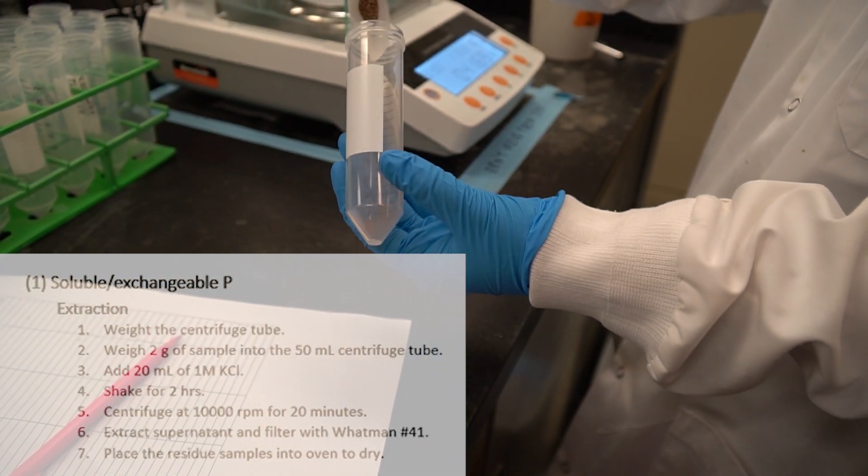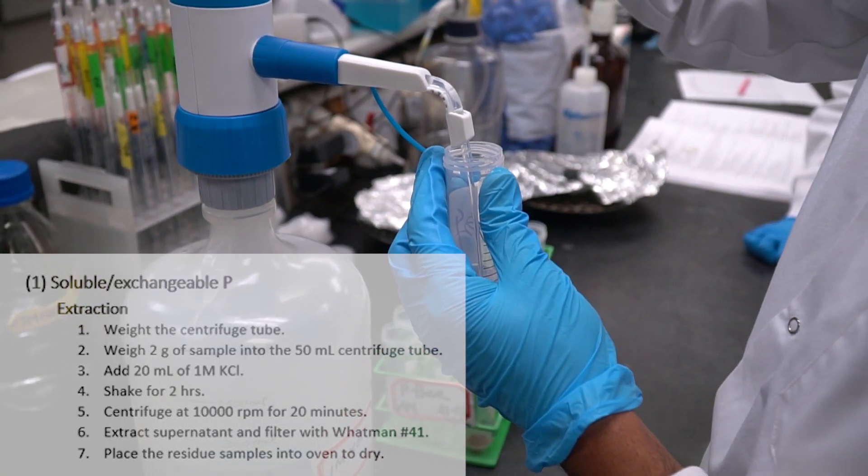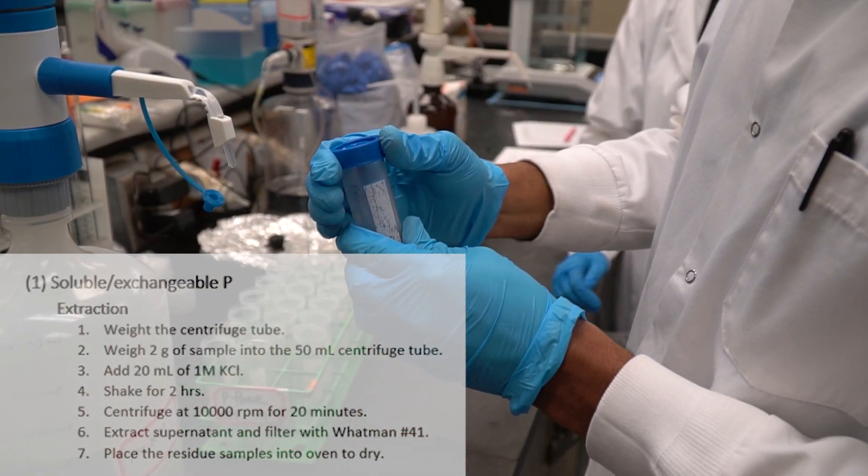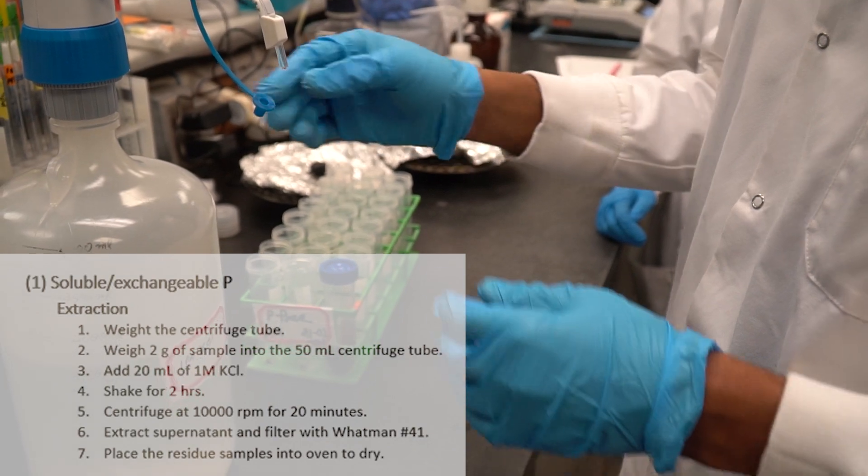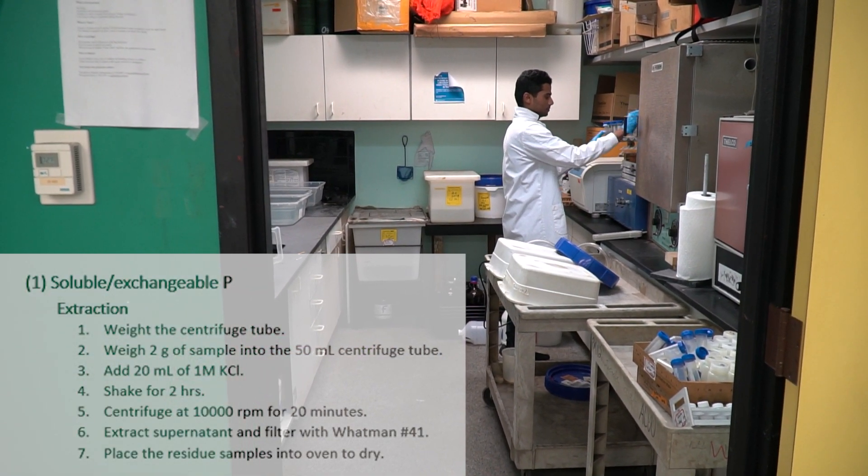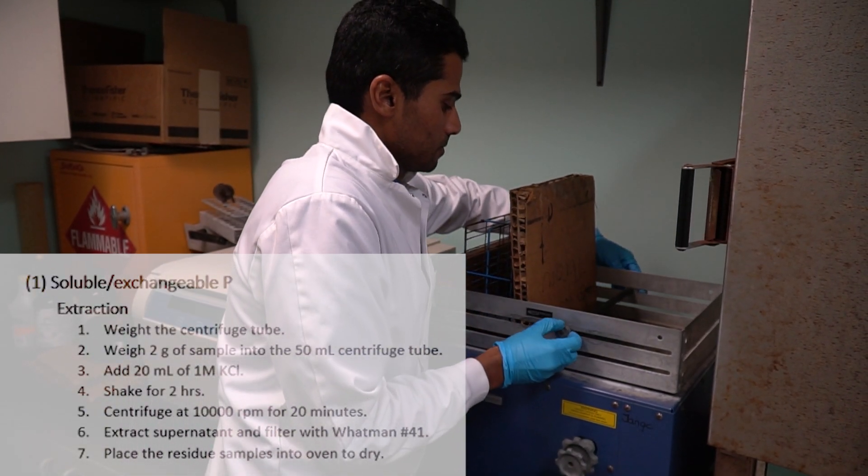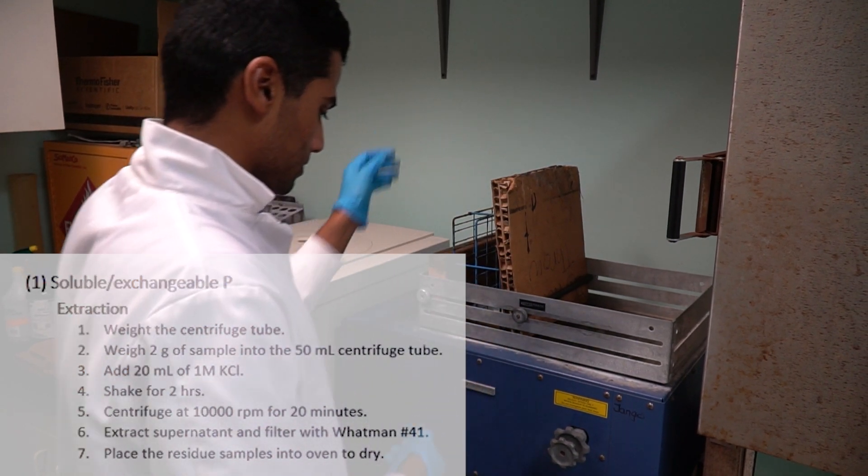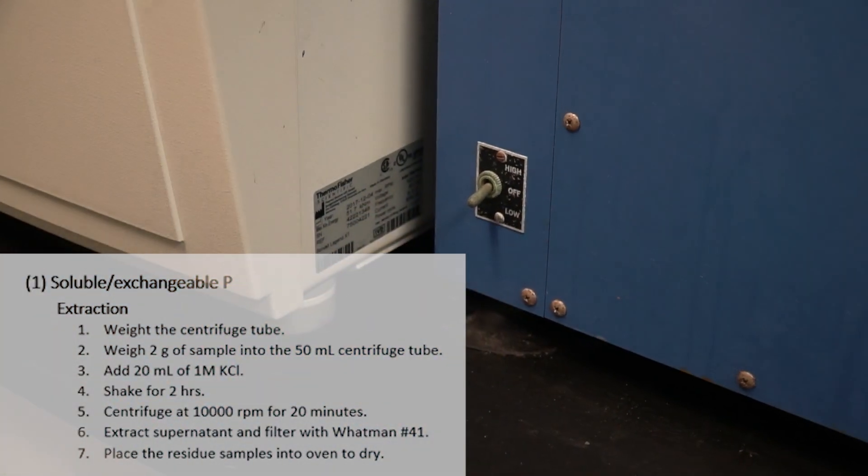To begin the extraction of soluble P, first you have to weigh the centrifuge tube. Then, you have to weigh 2 grams of soil samples and then put it into the 50 milliliter centrifuge tube. Then, you have to add 20 milliliter of 1 molar KCl followed by shaking for 2 hours. Then, you have to centrifuge at 10,000 rpm for 20 minutes.